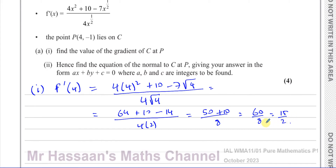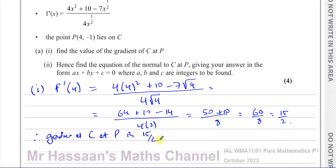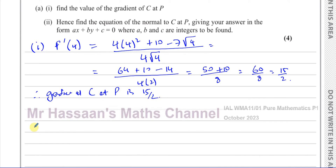So the value of the gradient of C at P is 15 over 2. That's the answer to part 1. For part 2, it says 'hence' — meaning using the answer you just found — find the equation of the normal to C at P.